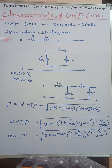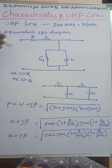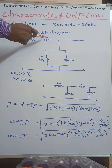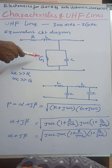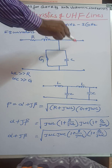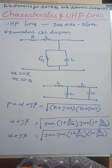The general equivalent circuit diagram for transmission lines consists of R and L in series, and G (transconductance) and C in parallel. This is the basic equivalent circuit diagram for transmission lines. But for UHF lines, omega·L is much greater than R, and omega·C is much greater than G.